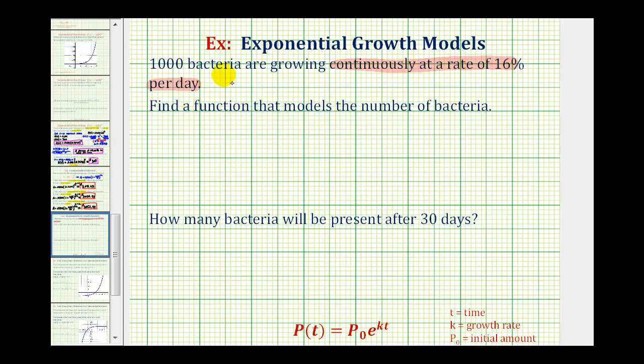So from the given information, we can use the function p of t equals the initial amount, which would be 1,000 times e raised to the power of kt, times t.